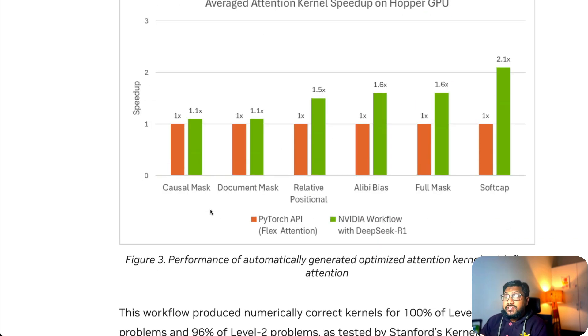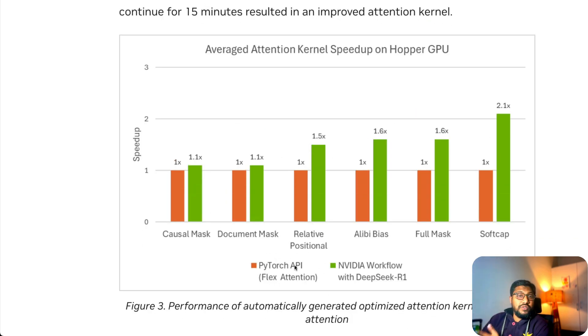In fact, they are saying that when you compare it with existing code which humans have created and the NVIDIA workflow with DeepSeek R1, you can see that across all these different tasks there has been an improvement. For causal mask, there is probably 10% improvement. Document mask, there is 10% improvement. For relative positional encoding, that is almost like 50% improvement. You can see that the improvement has been across all these attention kernels, GPU kernels, that the NVIDIA workflow created using DeepSeek R1.